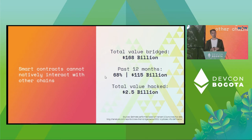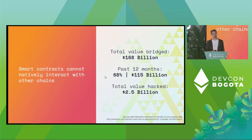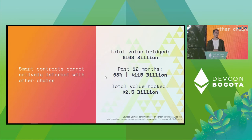There's also a lot of demand for bridging between contracts on different chains. Today, something like $168 billion of value have been bridged. Just in the past 12 months, we've seen over two-thirds of the total volume ever bridged — something like $115 billion. But we also have a challenge with security: to date, $2.5 billion have been hacked from cross-chain protocols. Just this year, over 70% of all value stolen in the blockchain ecosystem is from cross-chain hacks.